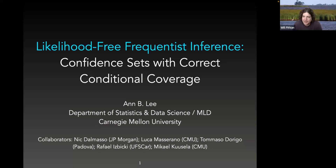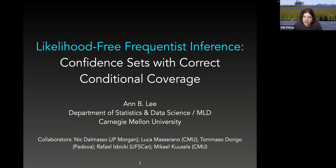Welcome, everyone, to this week's international seminar on selective inference. We're delighted this week to be doing a joint seminar with the Stamps Group from Carnegie Mellon University — a group on statistical methods for the physical sciences. They do work in meteorology, methods for particle physics and astronomy, and different areas in the physical sciences. We're delighted to have Ann Lee from Carnegie Mellon University, who's going to tell us about her work on likelihood-free inference.